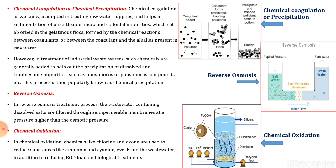In the reverse osmosis treatment process, wastewater containing dissolved salts is filtered through a semi-permeable membrane at a pressure higher than the osmotic pressure.